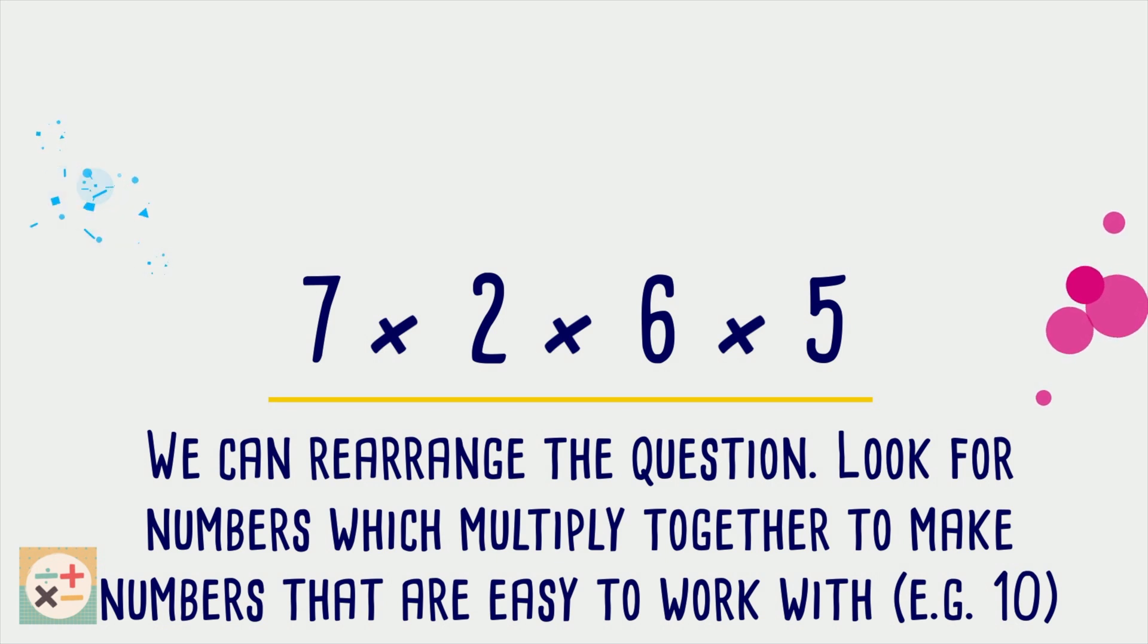In this question we can see that there is a 2 and a 5 which will multiply together to make 10. So, we can rearrange the question like this.